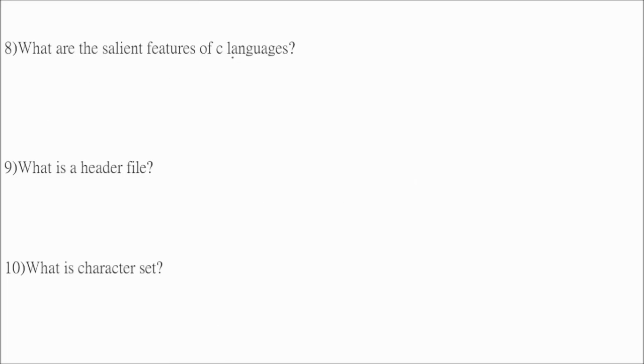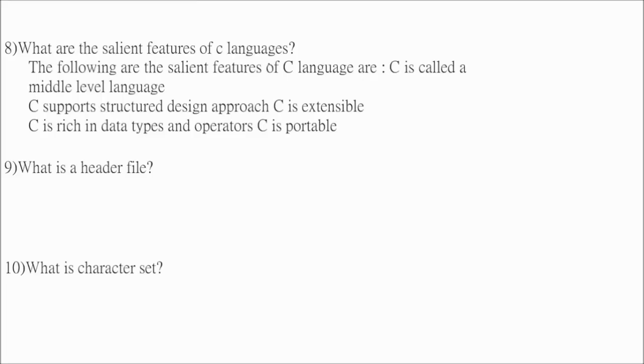So what are the salient features of C languages? These are the salient features of C language. C is called a middle level language. C supports structured design approach. C is extensible. C has rich data types and operator. And C is portable.